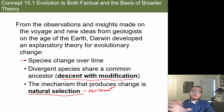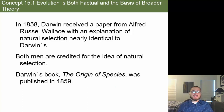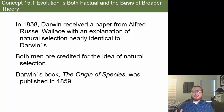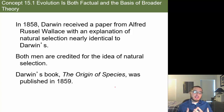In natural selection, nature is doing the selecting — the environment is choosing which ones survive and which don't. It's all about living long enough to reproduce. We look at whether an organism is fit for its environment — whether it will live long enough to reproduce and pass on its genes. The environment puts pressure on those genes.